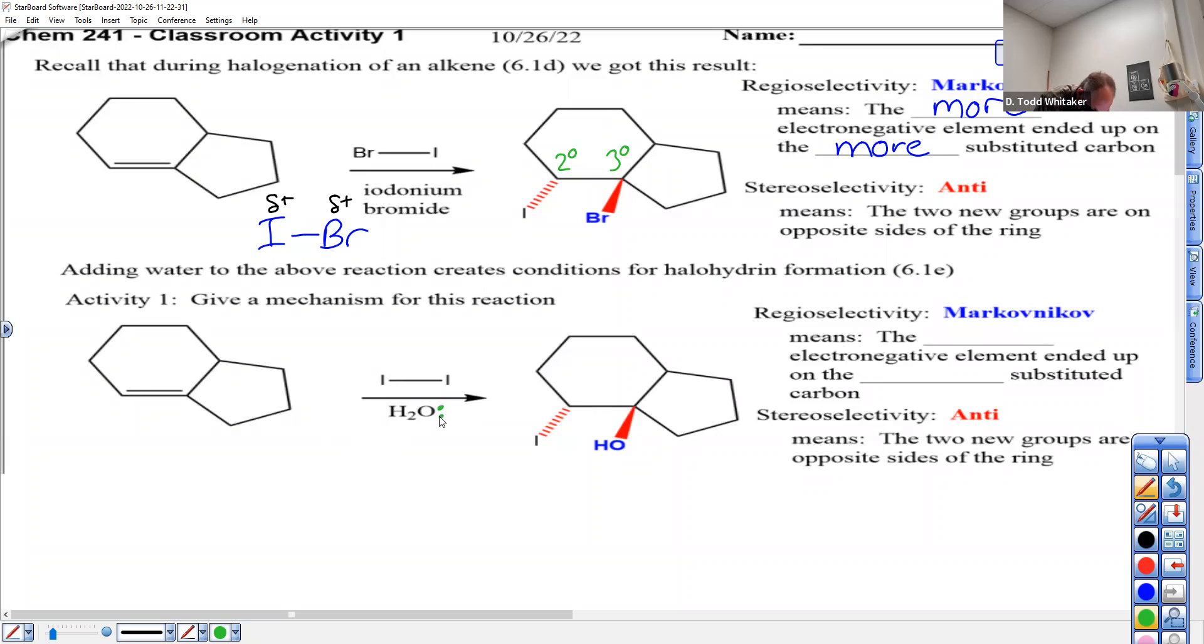So what happens here is we're going to have the same mechanism, except at the start water has already reacted. So don't forget to do this step first. Water hits one of the iodines and it makes this where iodine is now attached to water.